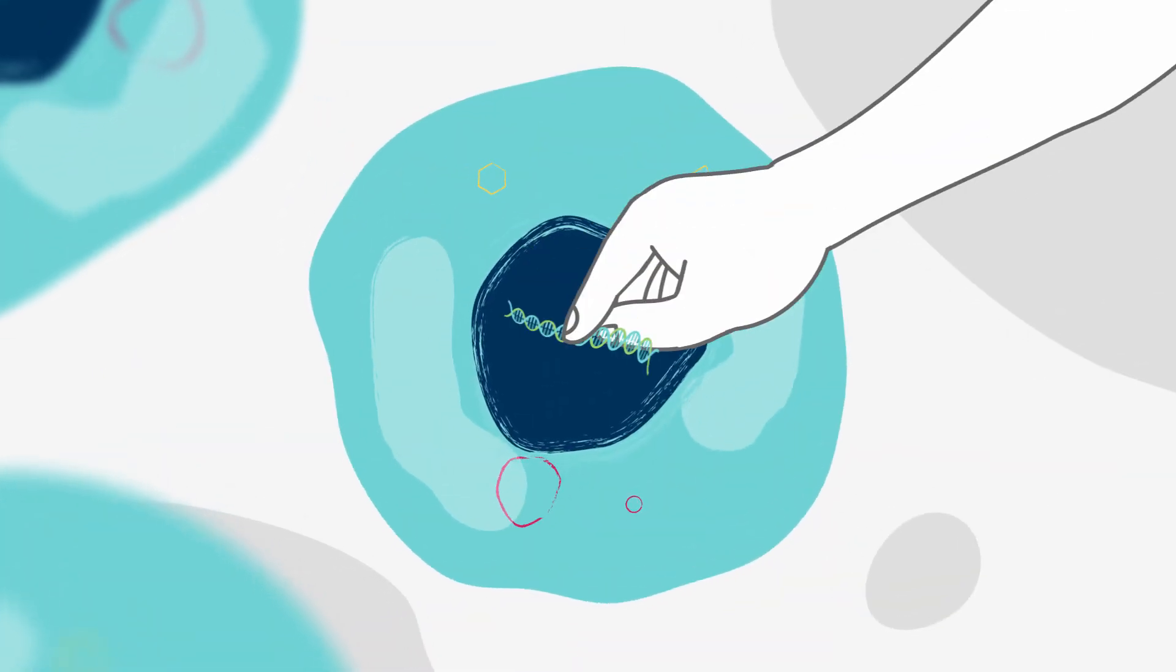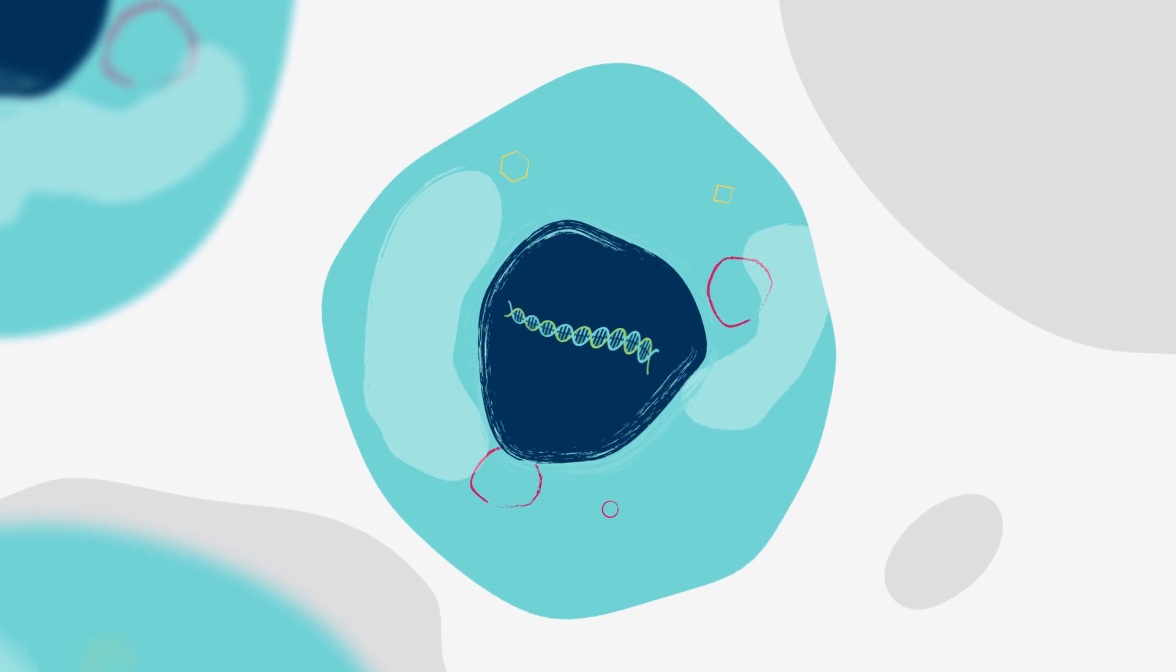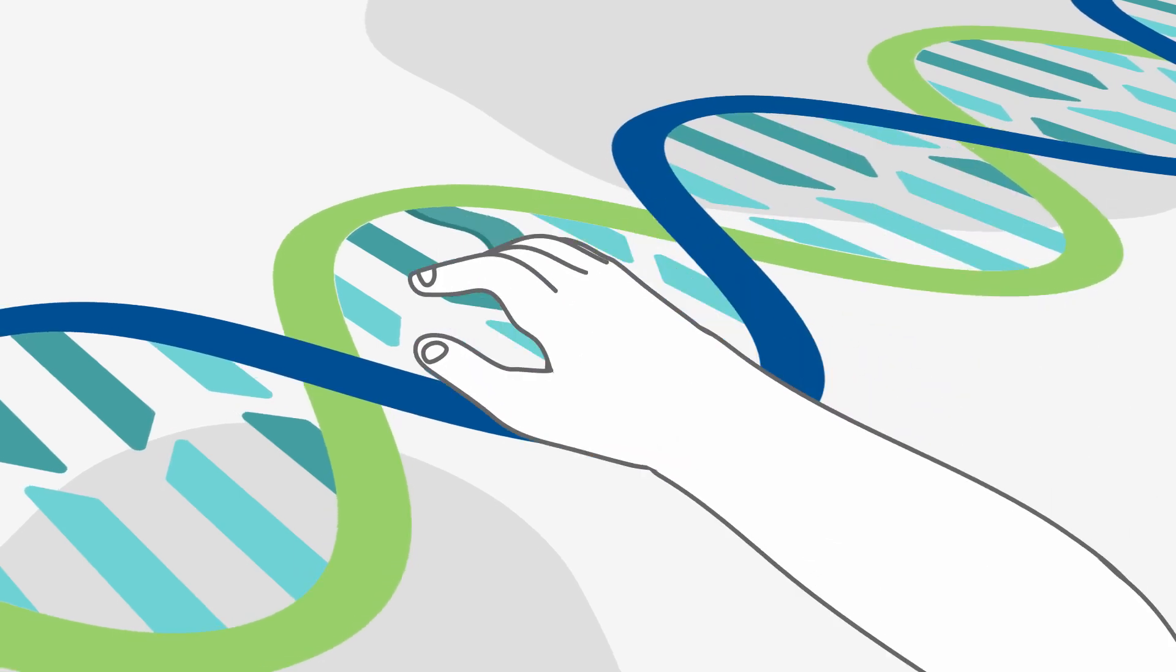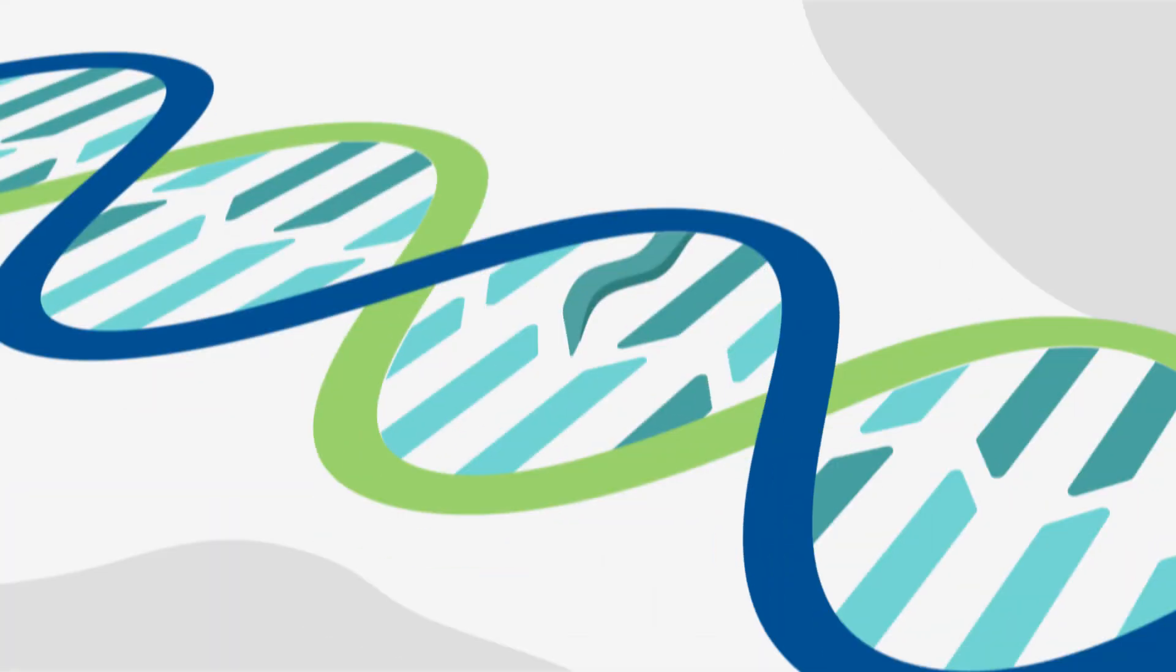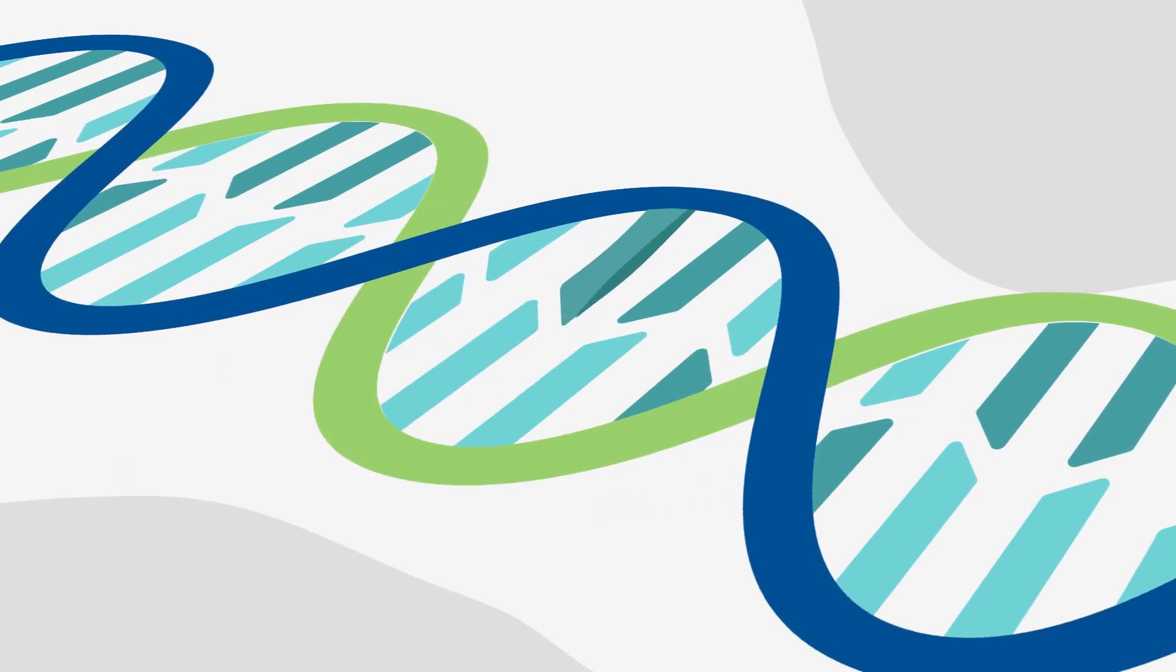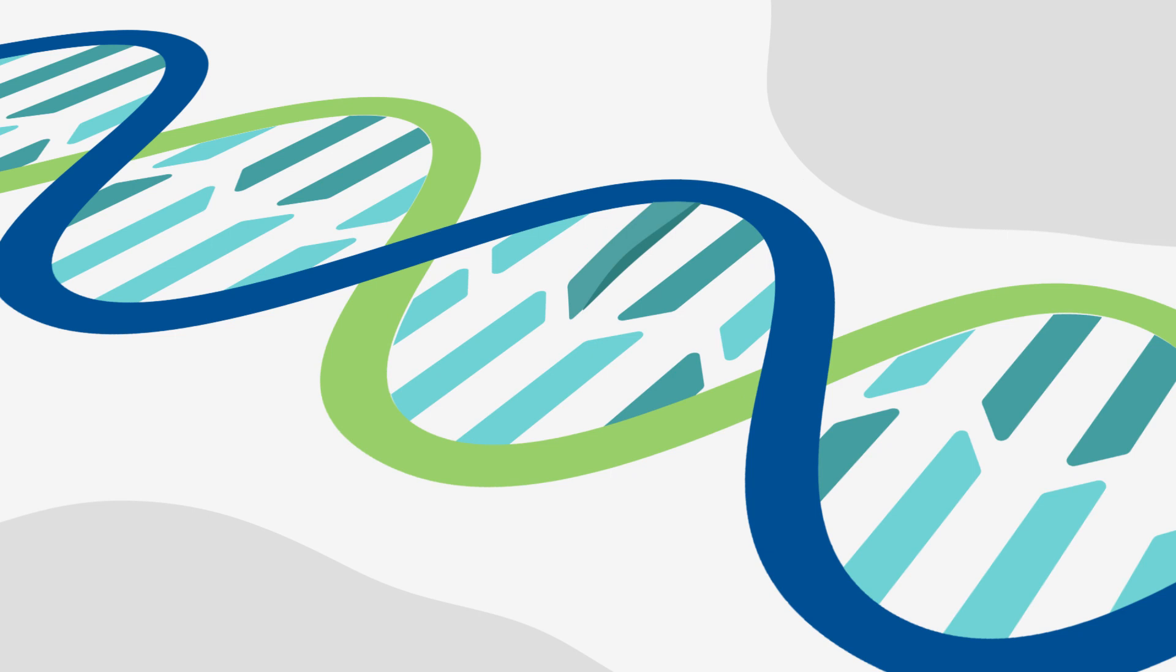Introducing a functioning copy of the gene will produce the necessary protein. Altering the way a gene is processed means, for example, skipping over a mistake. Editing delivers an editing tool to targeted cells, correcting the genetic instructions to restore protein production.